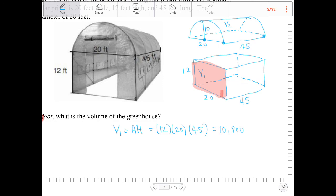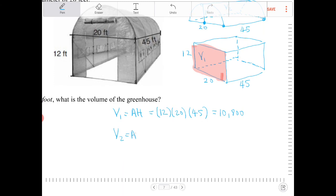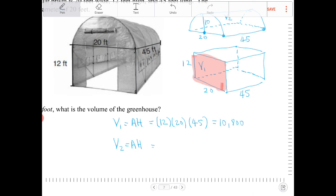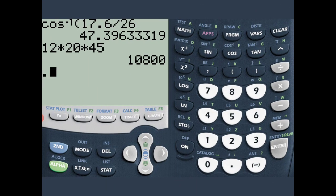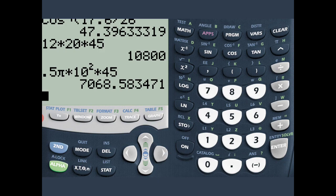To find the volume of the half-cylinder, again it's the same formula: the cross-sectional area multiplied by the lateral height. So it will be one-half π times 10 squared, multiplied by 45. Let's punch that into the calculator: 0.5 times π times 10² times 45, and we get 7068.58.